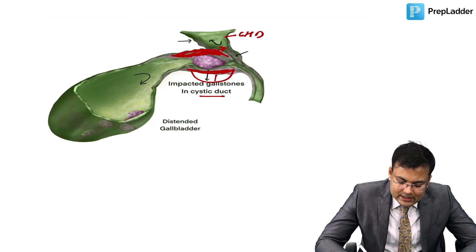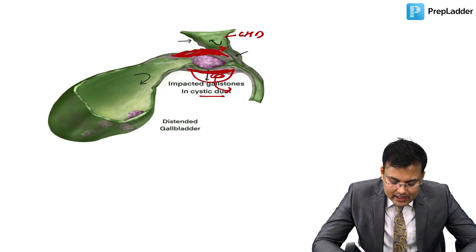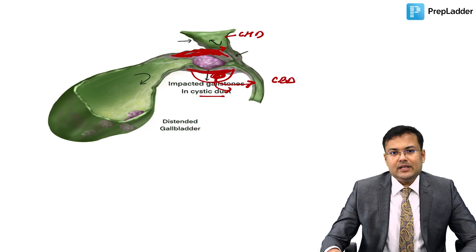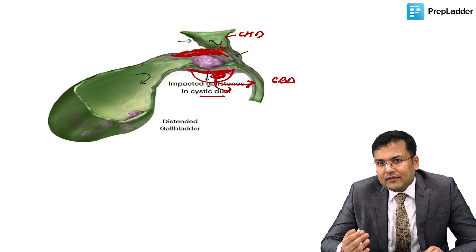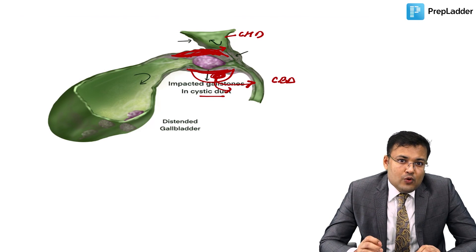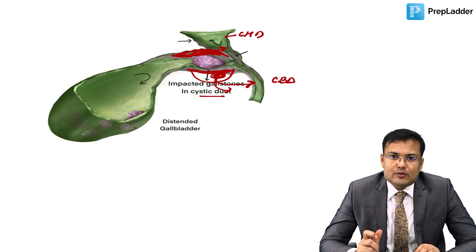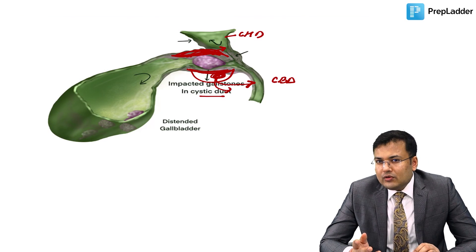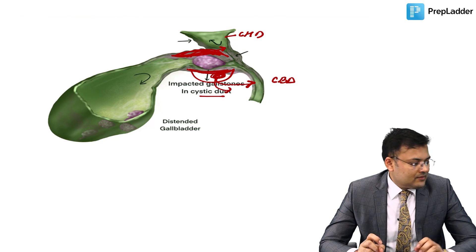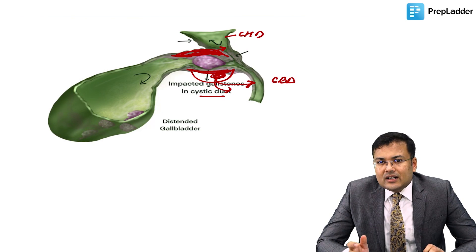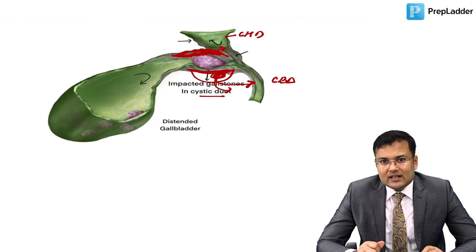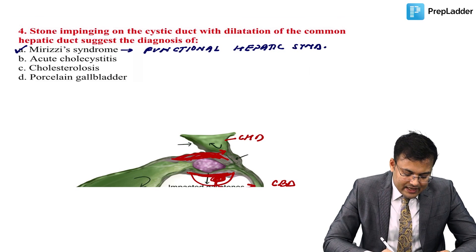Sometimes the stone is in Hartmann's pouch, compressing the common bile duct. In Mirizzi syndrome there is external compression of either the common hepatic duct or CBD. The stone is located in the cystic duct or Hartmann's pouch. The correct answer is Mirizzi syndrome.